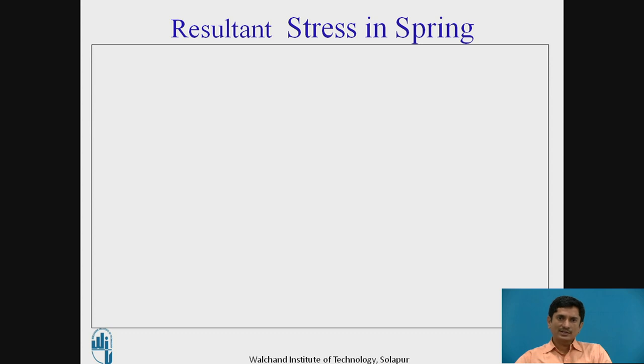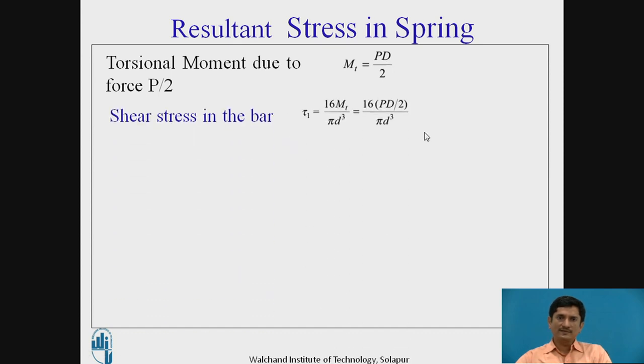Now let us see what are the resultant stresses in the spring. Torsional moment due to the force P by 2, torque is equal to P into D by 2. The shear stress in the bar is given as tau 1, which is stress due to torsional shear stress or torsional moment. We can simplify the equation and ultimately we can get tau 1 equals 8PD upon pi d cubed.